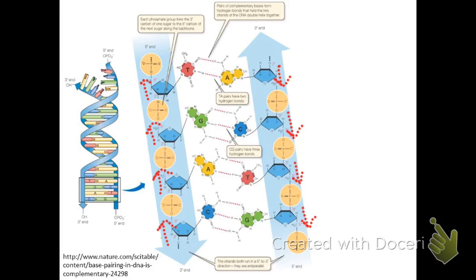The oxygen points to the five prime end of the molecule. Well, how does this three prime, five prime thing get its name anyway? Well, it's based on the structure of the sugar. So if you're looking at a sugar, you have five carbons.